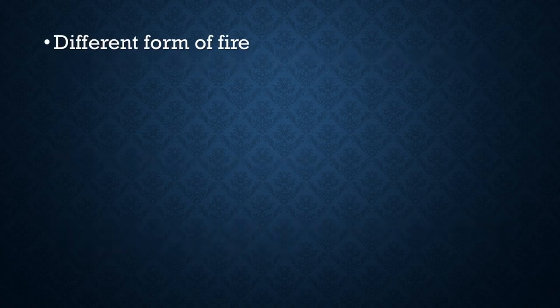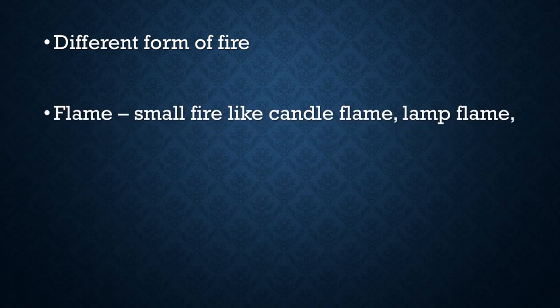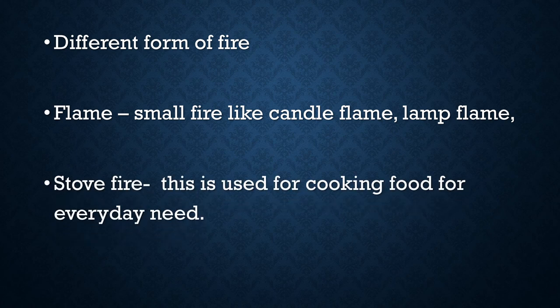Different forms of fire — ab hum aag ki roop dekhenge. Flame — lau — small fire like a candle flame or lamp flame. Moombati ki lau, lamp ki lau — use hum flame kehte hain. Stove fire — this is used for cooking food for everyday need. Gas stove ki aag ko hum stove fire kehte hain.